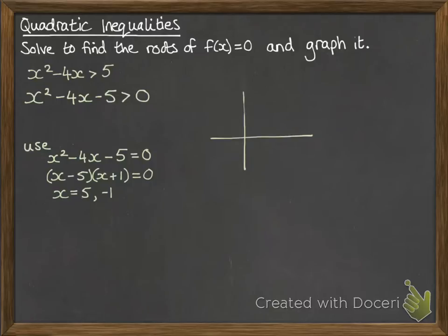Now with that we can graph the equation so that it looks like this. It's going to go through minus 1 and 5. Now from our graph we can figure out which way our inequalities go with our solutions around the roots.